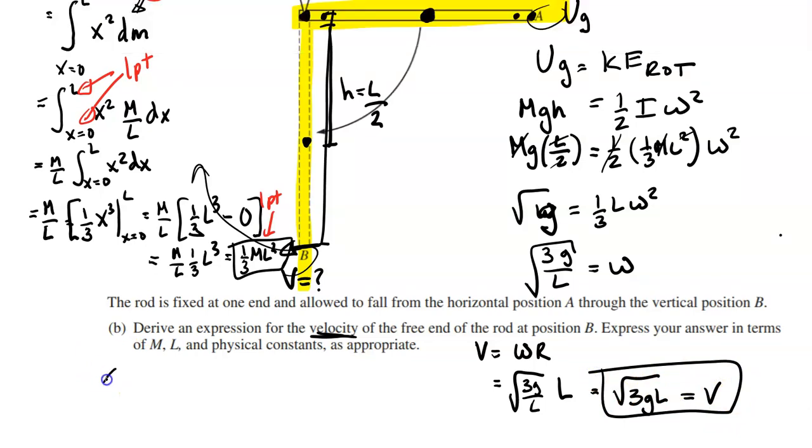Okay. So, for this part, we are going to use – this is also going to be out of 3 points. It is 1 point for using conservation of energy. So, if you use that strategy, you're going to get 1 point. You're going to get 1 point for using the height as L over 2. And then you're going to get 1 point for using the relationship between angular and linear velocity and also using R as L. So, those are your 3 points.